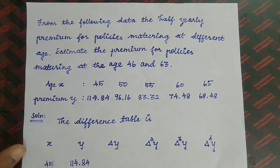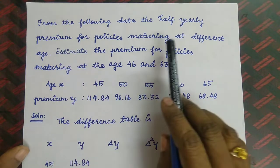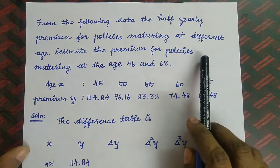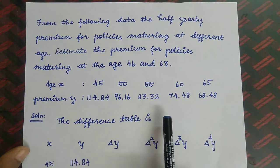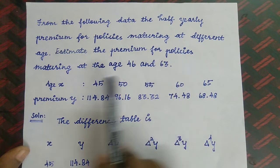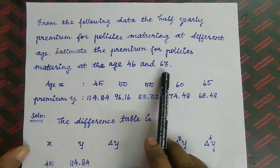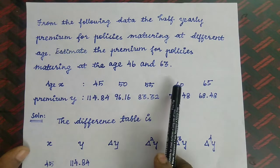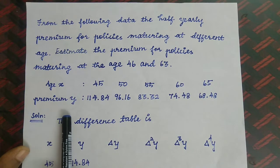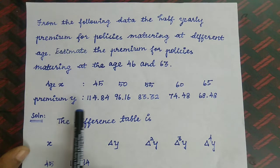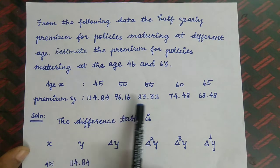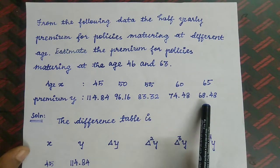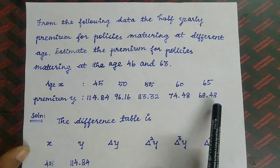Based on this, we can have a problem. From the following data, the half yearly premium for policies maturing at different ages — estimate the premium for policies maturing at age 46 and 63. The X data is: 45, 50, 55, 60, 65, and the premium Y data is: 114.84, 96.16, 83.32, 74.48, 68.48.